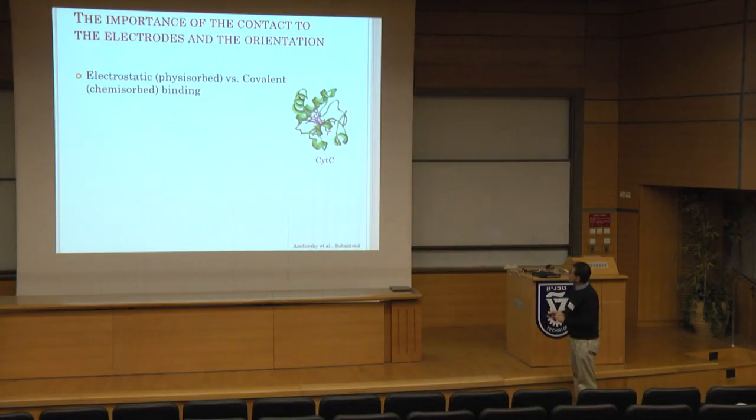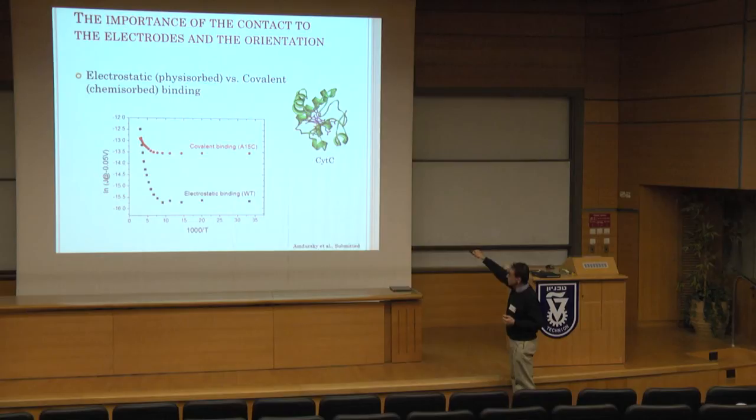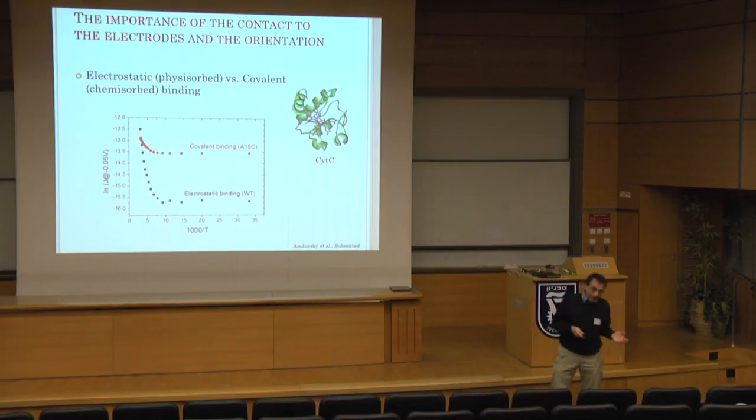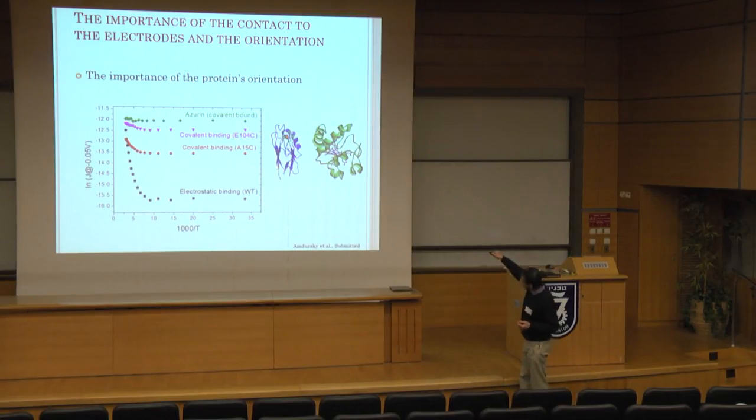Then there's also, at the end, the importance of the contact to the electrodes and the orientation. So I can compare electrostatic versus covalent binding. And you see a huge difference. So you can get control by covalent binding. And this we did with mutants, which we got from colleagues in Moscow. And we can put the covalent binder at different spots of this molecule. And we get different results, depending, in this case, on the orientation of the heme ring with respect to the electrodes.